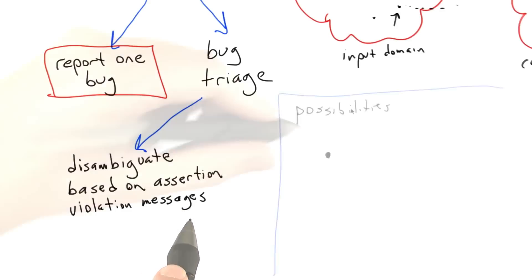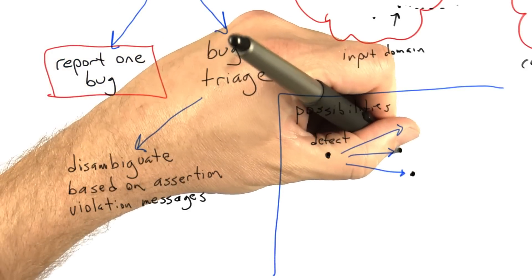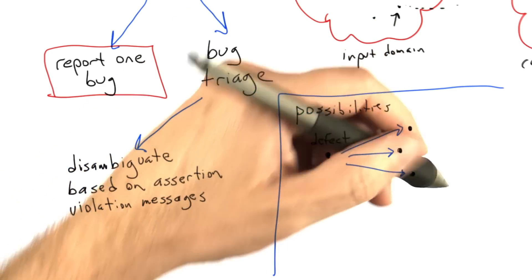One possibility is that we have a single root cause—a defect in the software under test—that can map to multiple outputs that look different. This is one possibility and it happens, although maybe not that often.